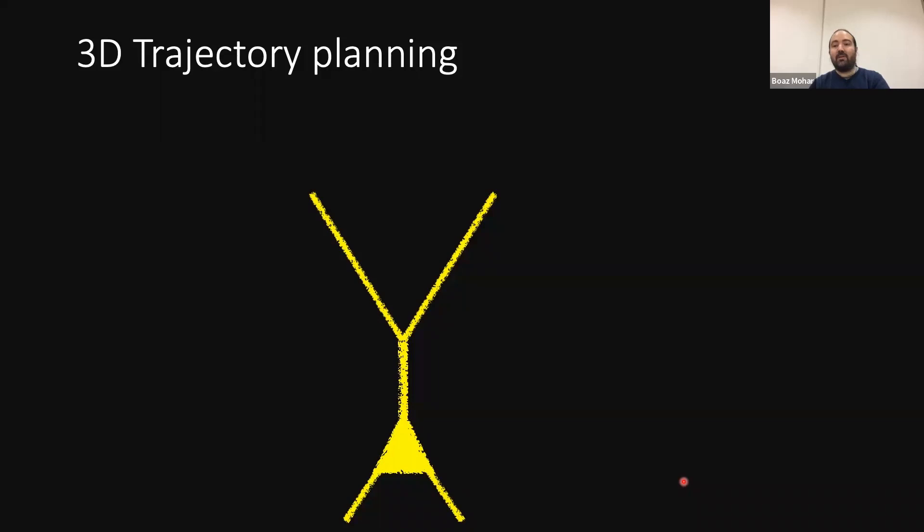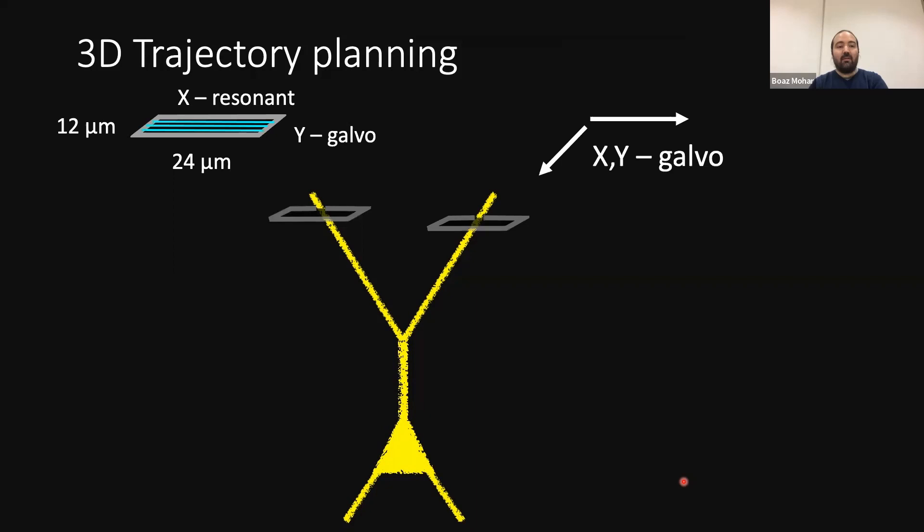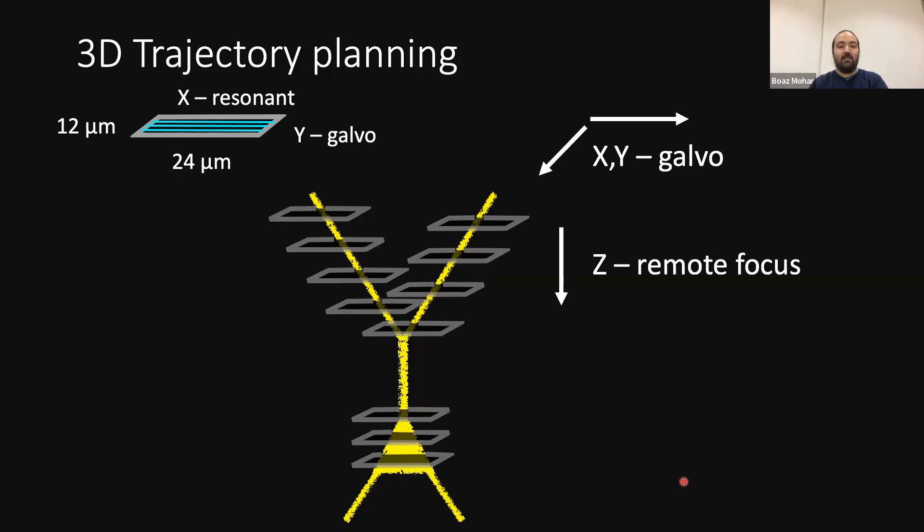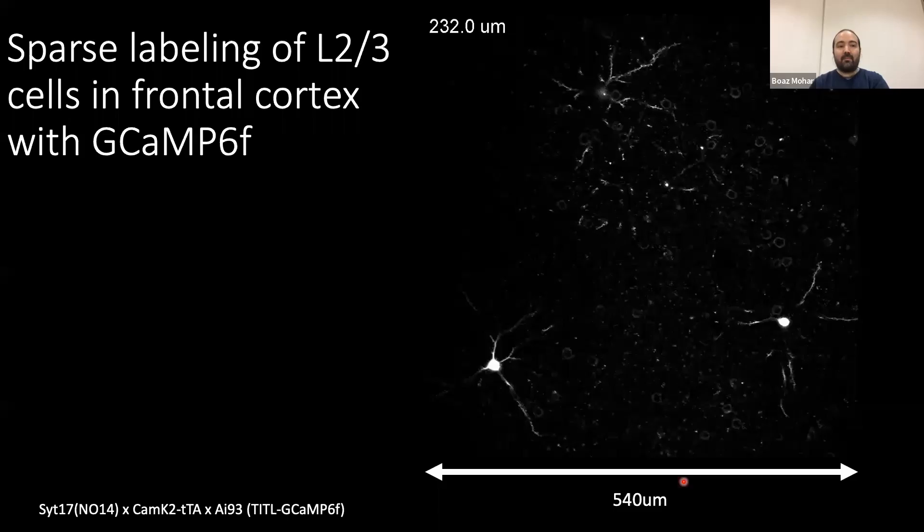And so now that we have this layout, how would we use this microscope to image a dendrite? Let's look at this cartoon neuron. Again, the X resonant and Y galvo would give us a small frame, and then we'll move that frame with the XY galvos to another branch, and then use remote focusing to image down, and we'll follow these postage stamps and put them along dendrites of the same cell, often jumping to the cell body to look at global signals correlated with the output of the cell. And so what's very important to this type of trajectory planning is that we know in advance where these dendrites are in space, and that they actually belong to the same cell.